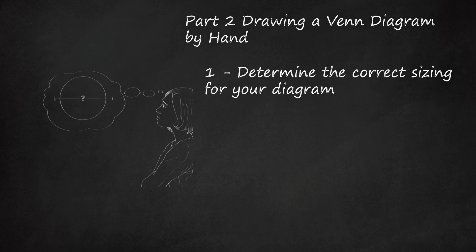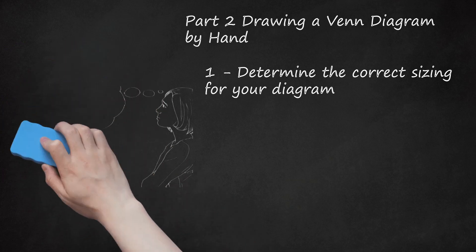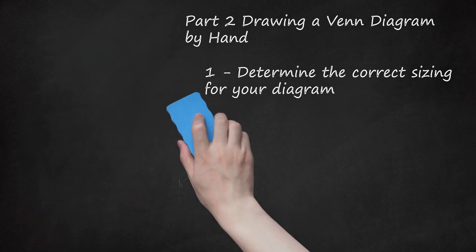When using a Venn diagram non-mathematically, it is best to err on the side of too much room rather than too little. So if you are using your diagram to brainstorm for an English essay, you might want to build a diagram that takes up most of a sheet of notebook paper.